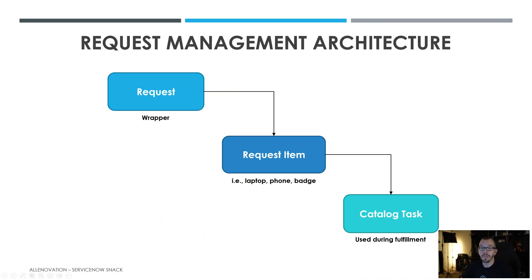Within the request architecture, there are going to be three main components: a request, which is known as the wrapper; a request item, which covers things like laptops, badges, and phones; and then there are catalog tasks. So for every request, there's going to be one or more request items within it, and those request items can have one or more catalog tasks, which are used for fulfillment by the agents.